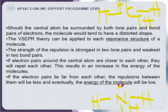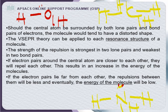VSEPR theory can be applied to each resonance structure of a molecule. Resonance structures may involve double or triple bonds that shift within the molecule. Regarding repulsion strength: the strongest repulsion is between two lone pairs, and the weakest is between two bond pairs. Consider water — the central atom is oxygen, linked to two hydrogen atoms by two bond pairs, and oxygen still carries two lone pairs.